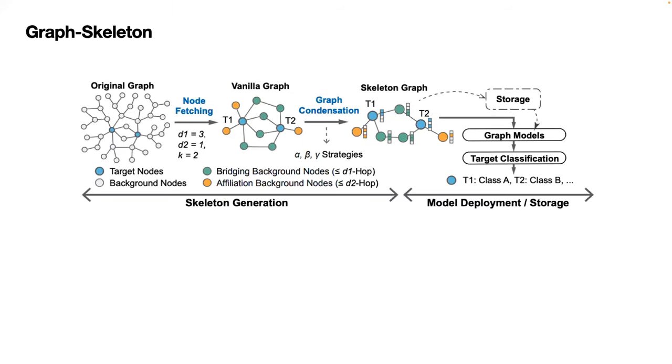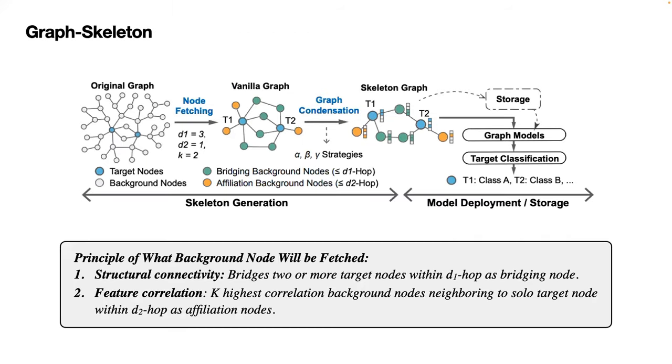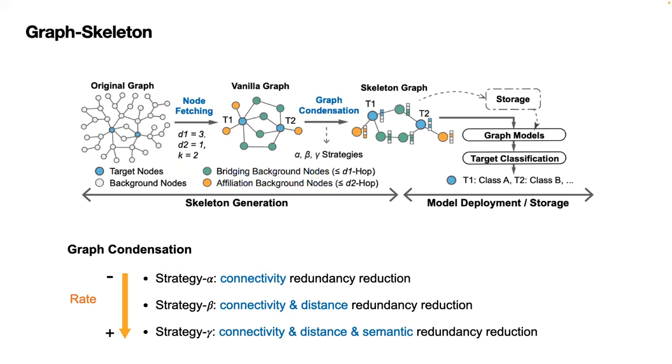Based on these insights, we propose the graph skeleton. It first fetches the essential background nodes under the guidance of structural connectivity and feature correlation. Then we develop three different condensation strategies to reduce the information redundancy of the background nodes.